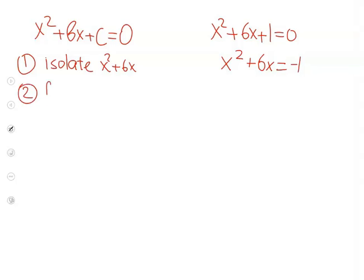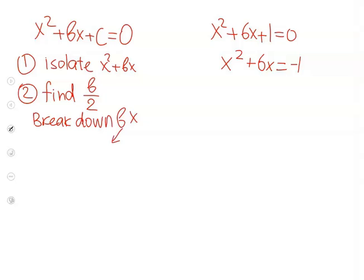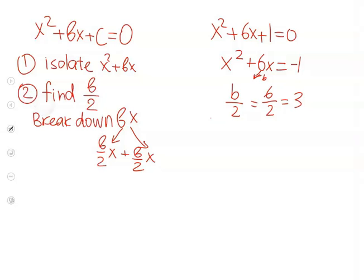Step number 2: find b over 2. We will find b over 2 and break down our term bx into two equal parts: b over 2 times x, plus b over 2 times x. So Ty, what is b over 2 in this case? So b is 6, so this would be 6 over 2, which equals 3. So we can write x squared plus 6x broken down into two parts: 3x and 3x, and we rewrite the other terms of our equation.